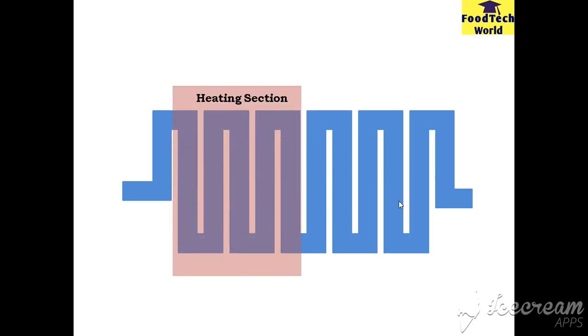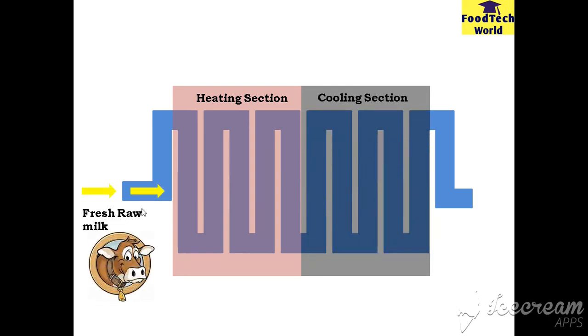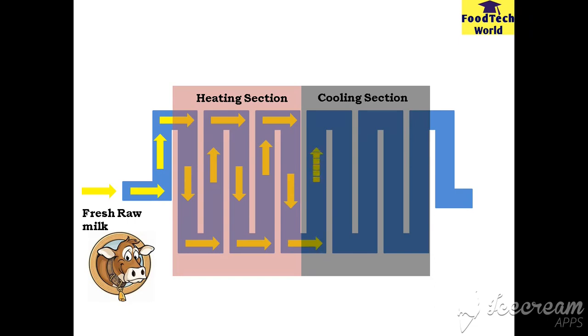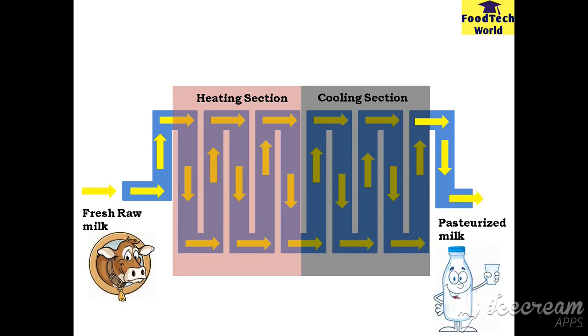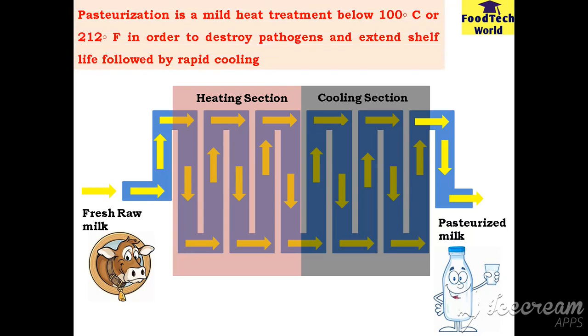This is the design of pipelines of a typical pasteurizer. This is the heating section and this is the cooling section. Milk is poured in one end and flows between a set of heating pipes for a set period of time — long enough to kill off most of the harmful bacteria. Milk from the heating section then enters the cooling section and flows between cooling pipes, emerging from the outlet pipe into milk bottles. Pasteurization is defined as a gentle or mild heat treatment below the boiling point of water to destroy pathogens and extend the shelf life of milk, followed by rapid cooling.